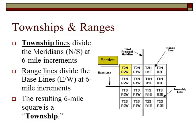Within meridians and baselines, we have smaller units of measurement — townships and ranges. The townships divide up the meridians by 6-mile increments, and the ranges divide up the baselines by 6-mile increments. What you see here is your meridian line, the bold vertical line, and the baseline, the bold horizontal line. Going north from the baseline, you have township 1 north, then township 2 north, each at a 6-mile increment. Similarly, you've got the ranges breaking up at 6-mile increments: range 1 east, range 2 east. So the highlighted block would be township 2 north, range 2 west.